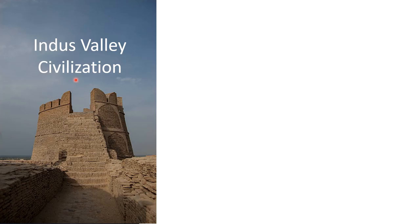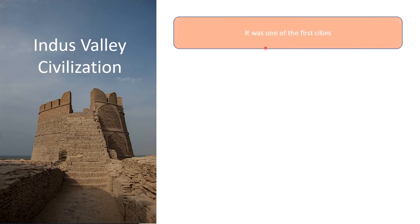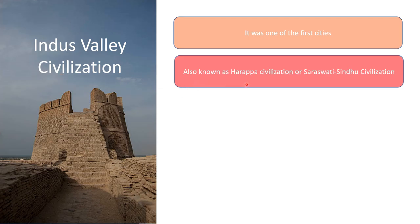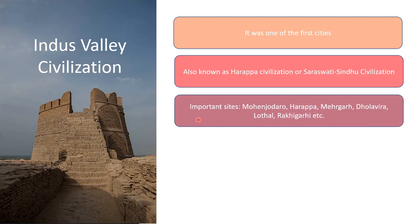The Indus Valley Civilization was one of the first civilizations — civilizations being when the first cities are formed. It is also known as the Harappa Civilization or the Saraswati Sindhu Civilization. The important sites here were Mohenjo-Daro, Harappa, Mehrgarh, Dholavira, Lothal, Rakhigarhi, and others.